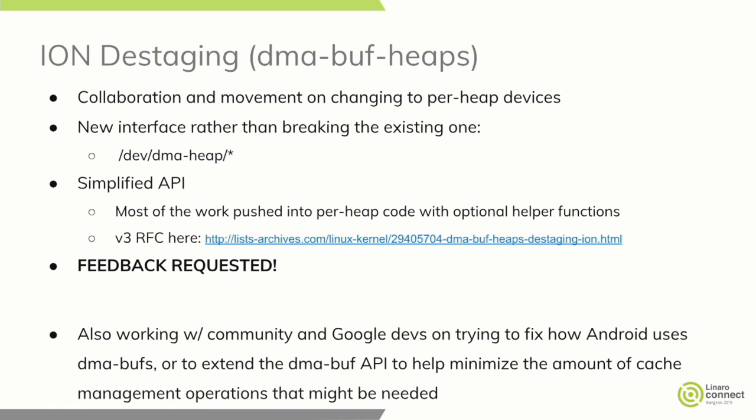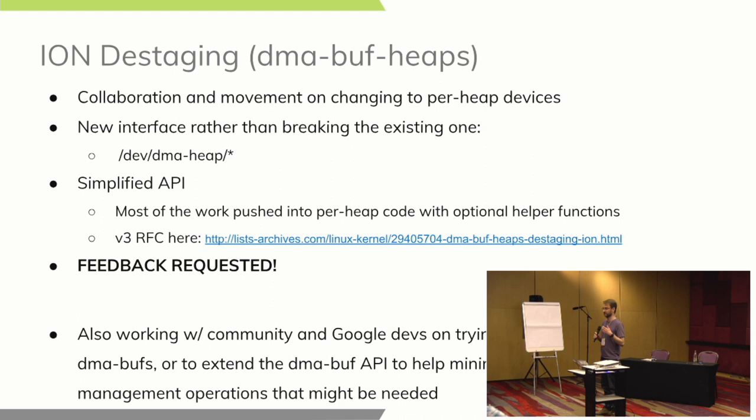Part of the problem is that ion is this big, kind of hairy solution to a bunch of problems. Despite a lot of efforts — Sumit and Benjamin have both taken good swings at trying to get some functionality upstream — this attempt is trying to cut off a very small portion of it, just the allocation API, and clean up some of the suggestions that we've gotten to the ion code over the years.